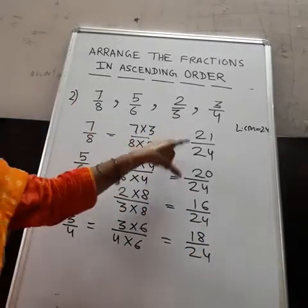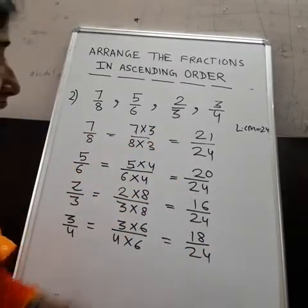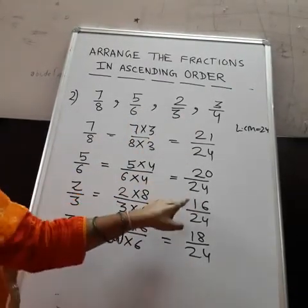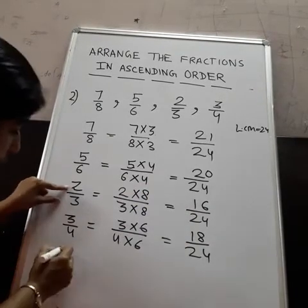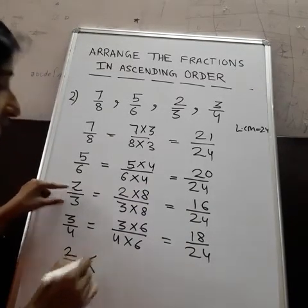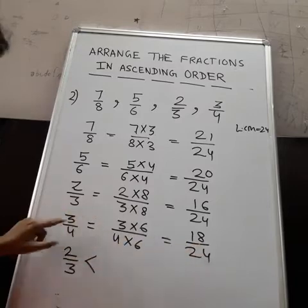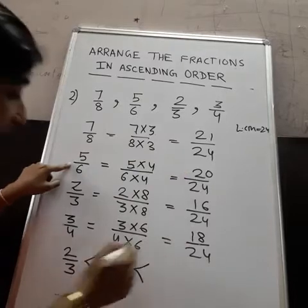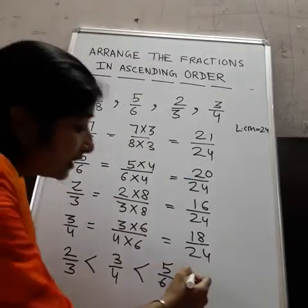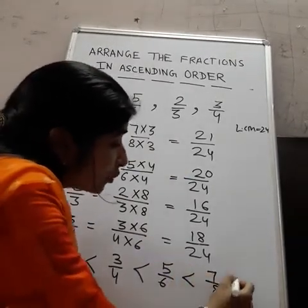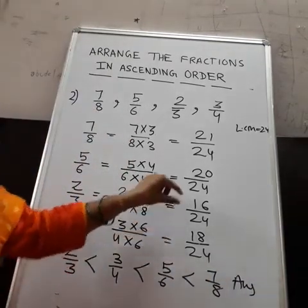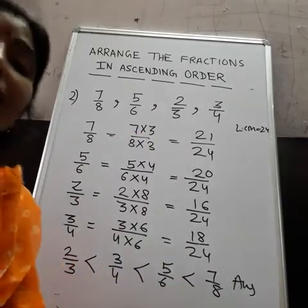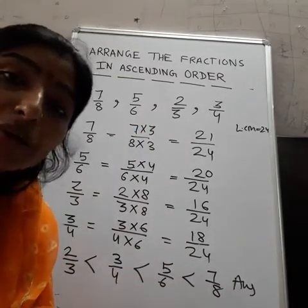Now see which is the smallest. These are all like fractions now. The smallest numerator is 16, which corresponds to 2/3. So: 2/3 is less than 3/4, which is less than 5/6, which is less than 7/8. This is our answer — 2/3 is the smallest and 7/8 is the biggest. So we have arranged them in ascending order — smaller to bigger.